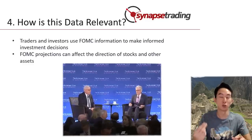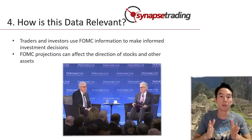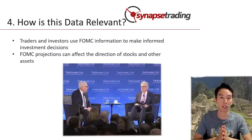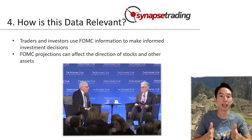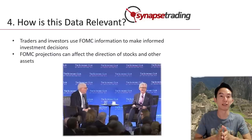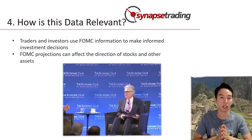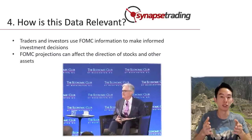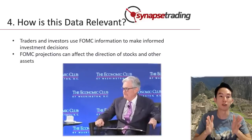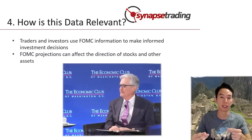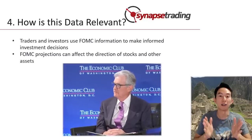Traders and investors typically use the information from FOMC statements and economic projections to inform their investment decisions. They pay attention to the current target range for the Federal Funds Rate and any changes to it, as changes in interest rates can affect the value of bonds and other fixed income securities. They also pay attention to the economic projections, as this can provide insight into the committee's view of the future performance of the economy, which also affects the direction of stocks and other risk assets.